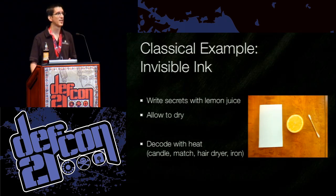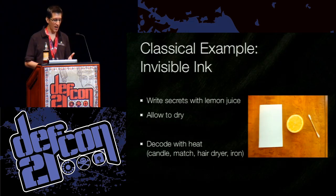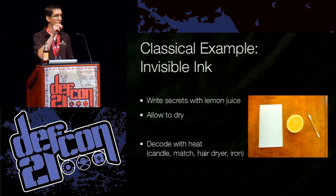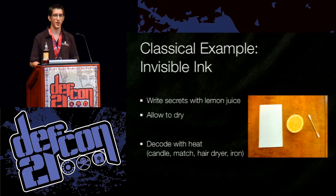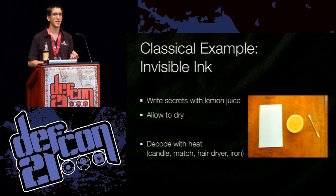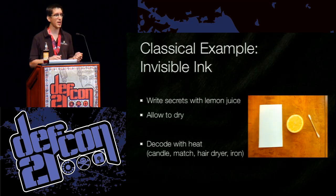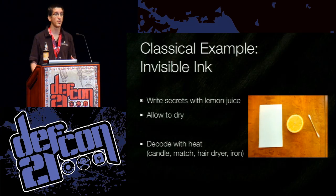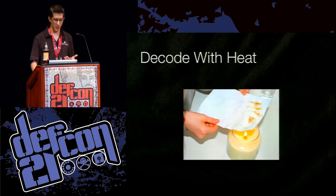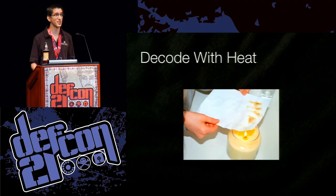The next classical example is invisible ink. This is a very simple but quite effective technique. Basically, you would use lemon juice or something acidic, write on top of a piece of paper with this liquid, allow it to dry, and then deliver the paper to your recipient. The paper would have other writing on it so it looks like it says one thing, but the acid in the lemon juice breaks down parts of the paper. When you put that piece of paper over heat, it would start to burn, but the parts broken down by the acid burn first, turning darker so you can read the hidden message. This is a lot of fun to do with young kids.